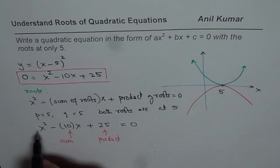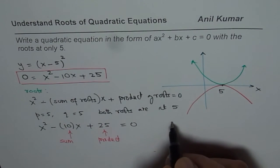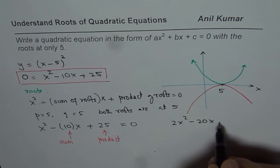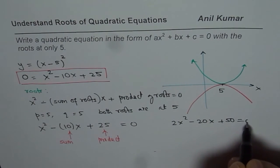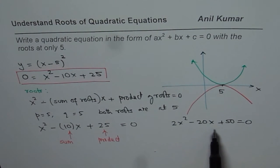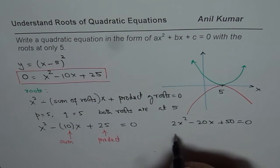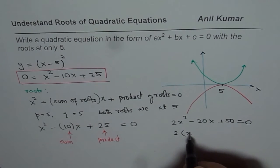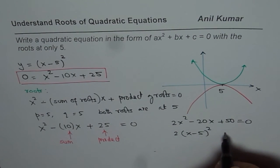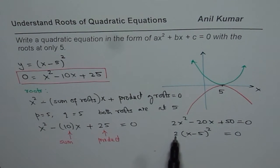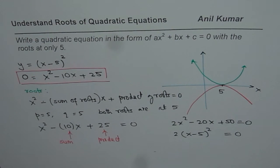And therefore, an equation like, let me write this times 2. Let us say 2X squared minus 20X plus 50 equals to 0 will also give us roots, 2 roots at 5. I could write this as 2 times X minus 5 whole squared equals to 0. So I could change this number and write any number of equations representing the given condition.